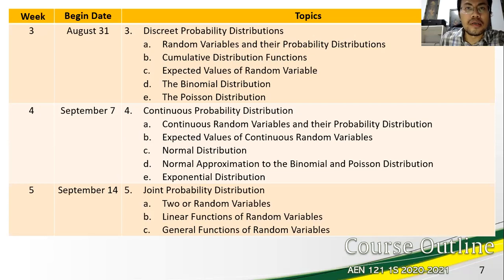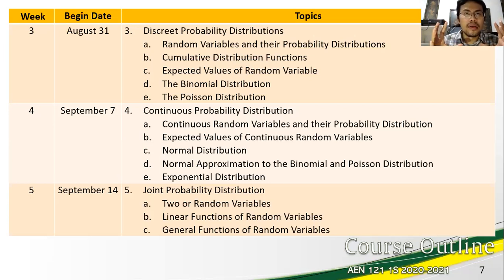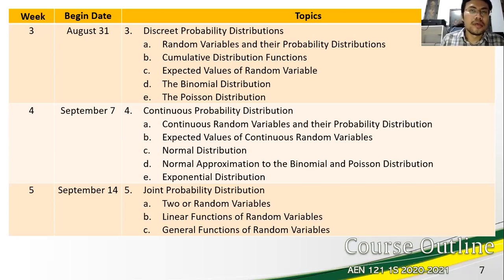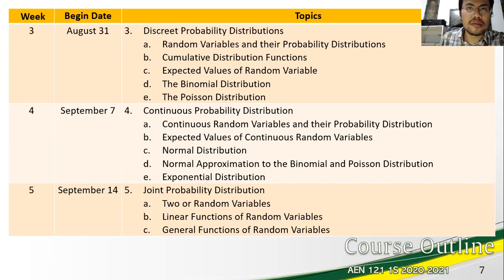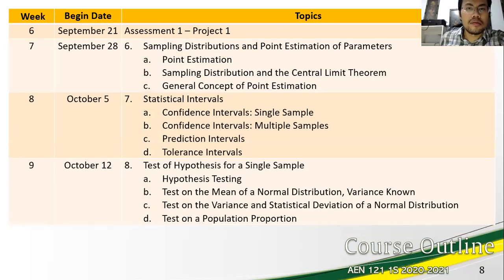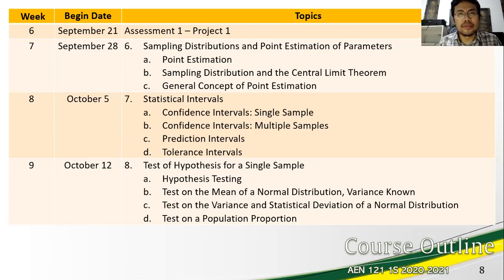The distributions should be representative of the engineering data from the system you are looking into. Engineering data often takes the form of numerical values from the real number system. We will tackle the binomial, Poisson, Normal, and exponential distributions and their derivatives. By the end of the first assessment period, students should be able to apply the correct distribution to various engineering variables. Details of the first assessment period project will be provided in week six.